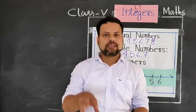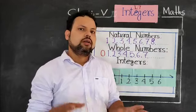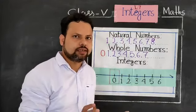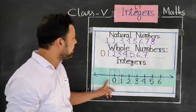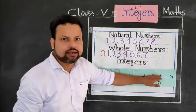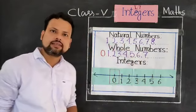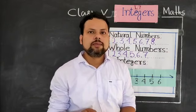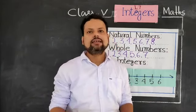Now we have to concentrate on your chapter: integers. When we explain integers, imagine I have placed a mirror in place of 0 on your number line. On one side, we have 1, 2, 3, 4, and so on. But in integers, not only positive numbers are there — negative numbers will also be there, and 0 will be there.